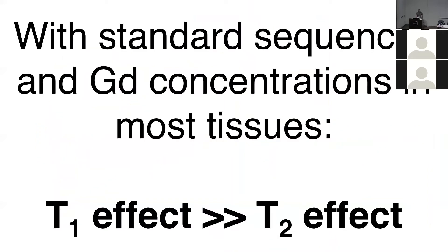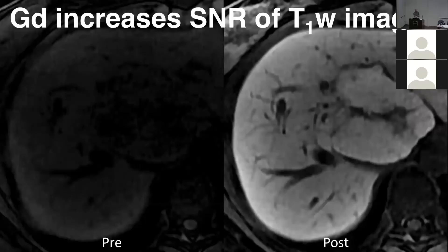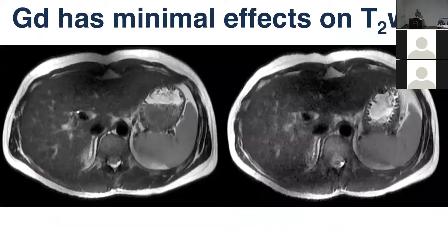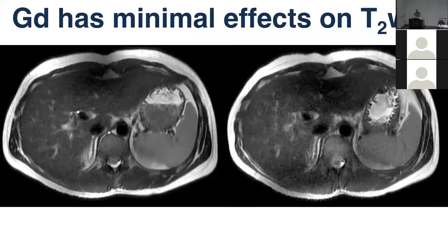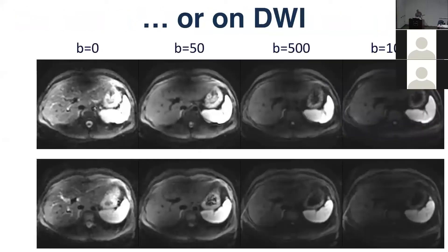With standard sequences and gadolinium concentration in most tissues, the T1 effect dominates over the T2 effect. When we give standard concentrations of gadolinium, the tissues become much brighter on T1-weighted images. Gadolinium has minimal effects on T2 — the pre-gad and post-gad images look very similar on T2. On T1, there are huge differences; on T2 and DWI, very little effect. The images above are without gadolinium, the images below are with gadolinium.